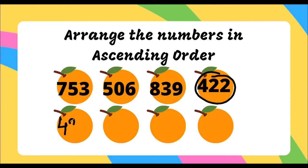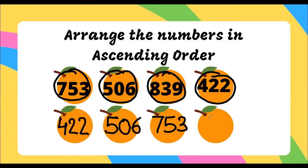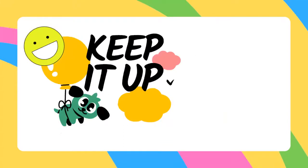Out of the three remaining numbers, the smallest is 506. Now out of the two left — 753 and 839 — the smaller number is 753. And the number that's left is the biggest number: 839. Well done, superb — keep it up!